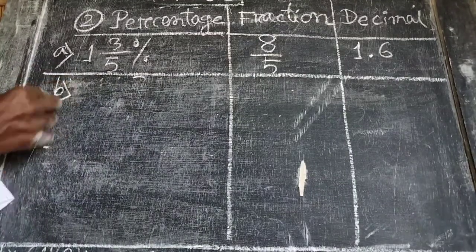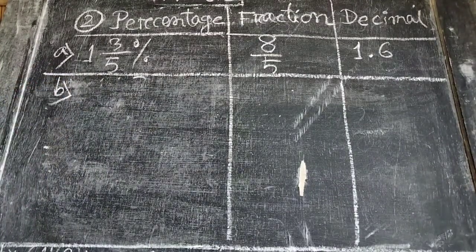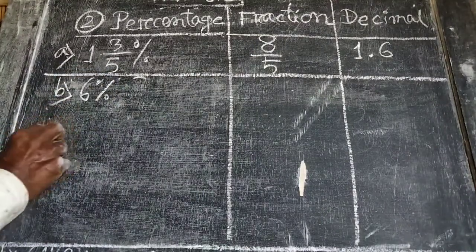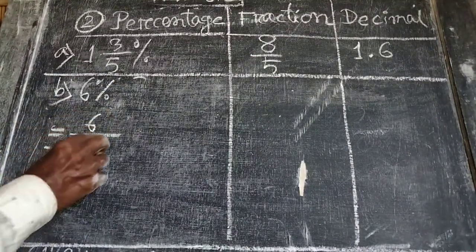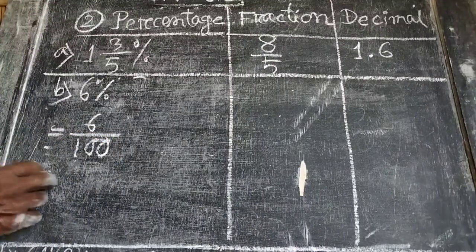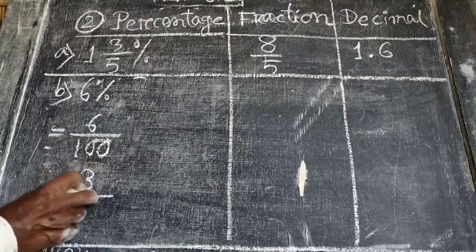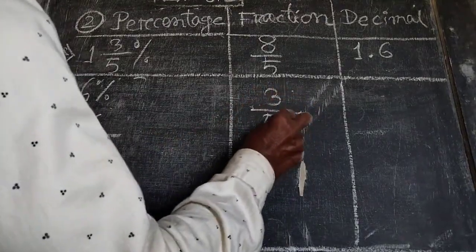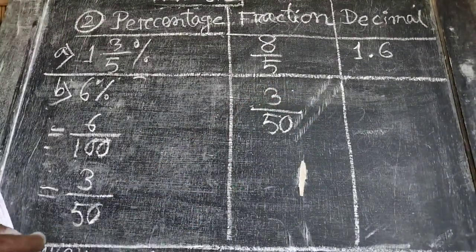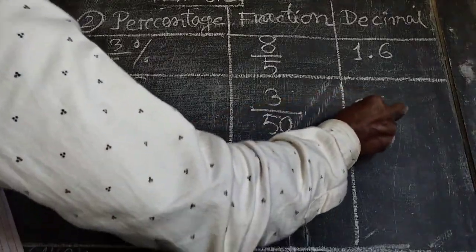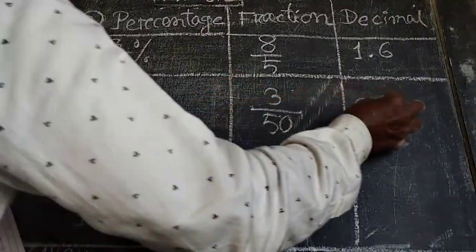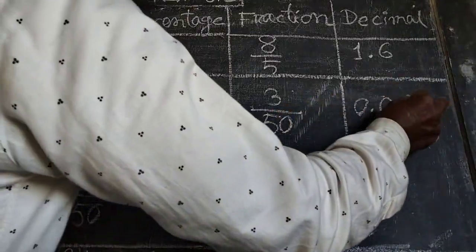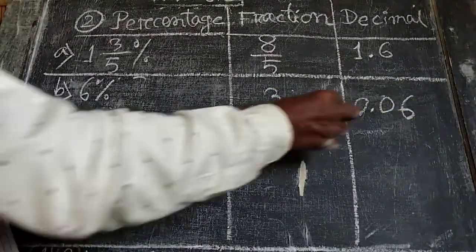(b) 6 percent equals 6 by 100. Dividing by 2, it is 3 by 50. So the fraction is 3 by 50. For the decimal, it is 0.06.